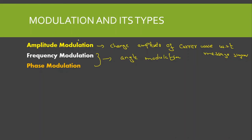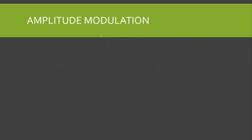Frequency modulation and phase modulation combined are called angle modulation. Amplitude modulation is a linear modulation, while angle modulation — frequency and phase modulation — is a non-linear modulation.